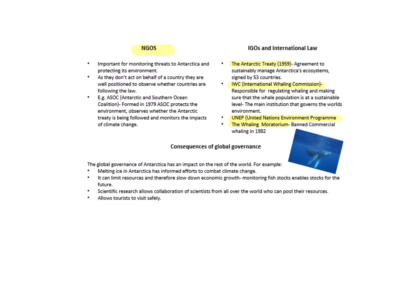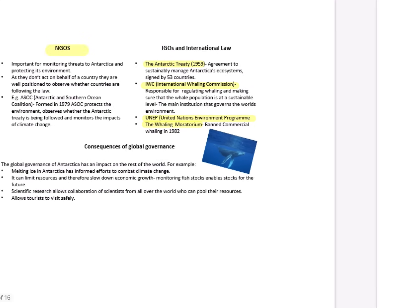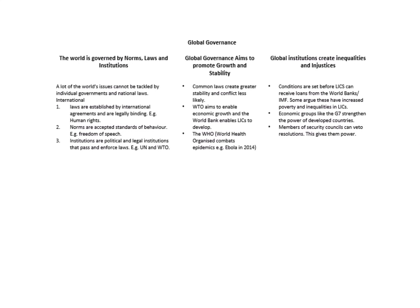Of course you can disagree, but that's where your AO2 marks come from in your 20-markers. Linking back to global governance, I can branch this into three categories: first, the world is governed by norms, laws, and institutions aiming to promote growth and stability; however, it does create inequalities and injustices. For each of these, check you can link to the bullet points and know why it's an issue — and make sure you can evaluate it to score those AO2 marks.